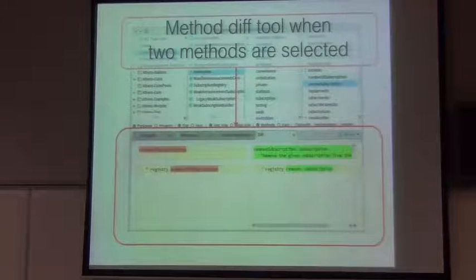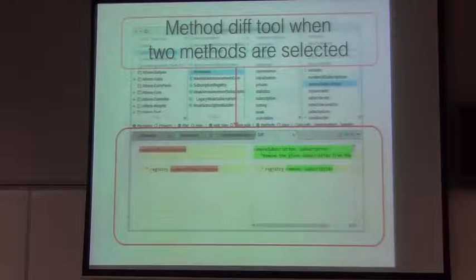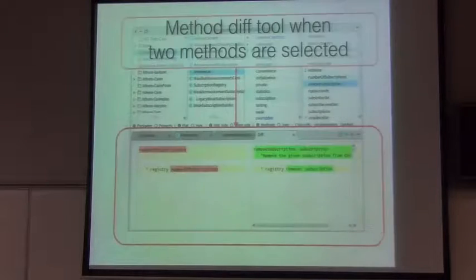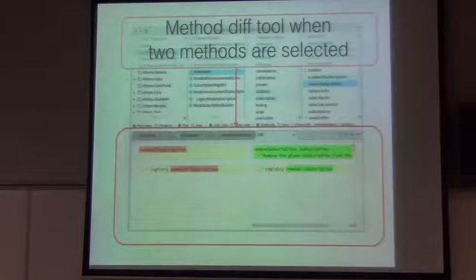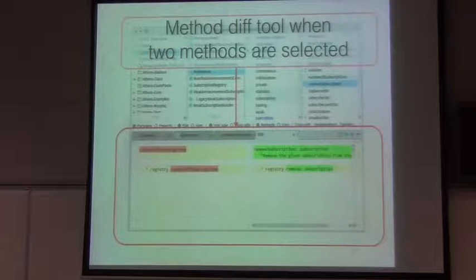Another tab is the method diff, which is activated when you select multiple methods — for example two methods. This might be changed in the future, because when you select two methods, instead of showing the diff, we could show two methods side by side. The idea is that when you select three or four methods, it can add four tabs and show them together, allowing you to edit multiple methods at the same time.